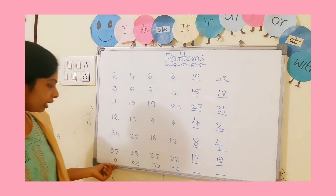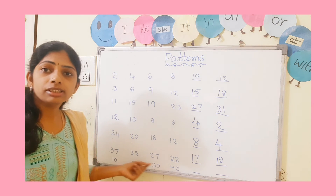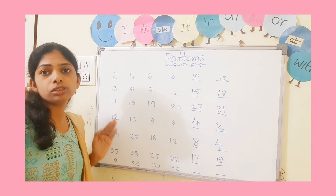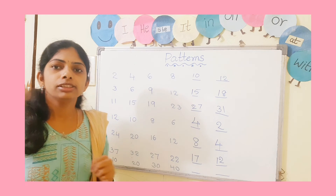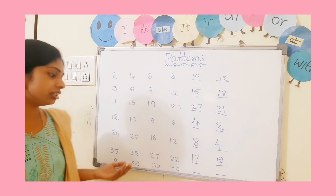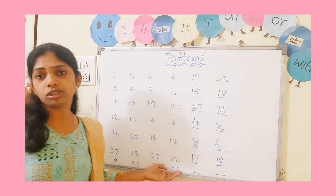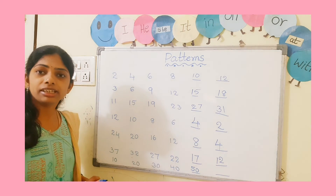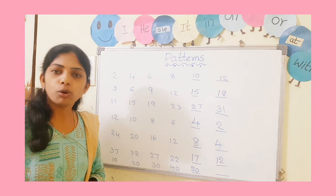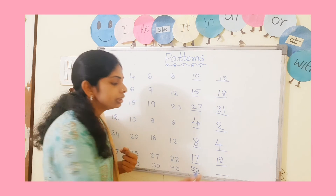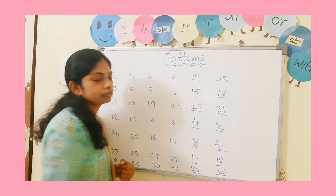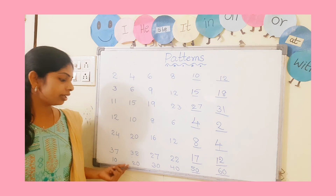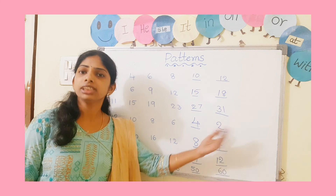Now check the last one: 10, 20, 30, 40. The first number is smaller and the next is bigger — 20 is bigger than 10 — so it is increasing order. We must count forward. The children can easily say the next number is 50, then 60. That means it is increasing by 10 numbers each time — only the tens place changes: 10, 20, 30, 40, 50, 60, 70, and so on.